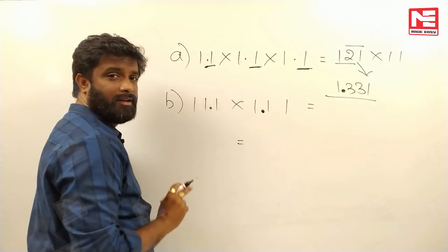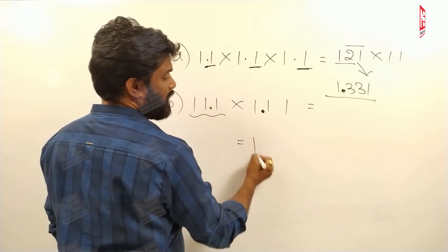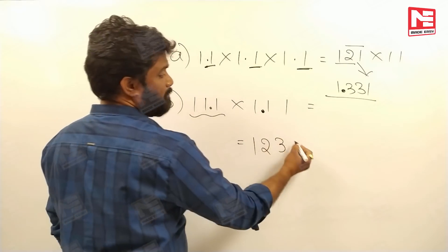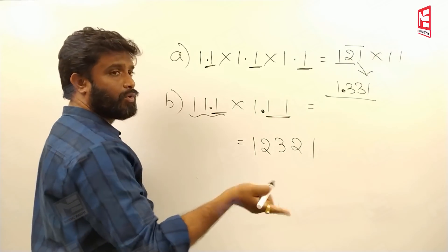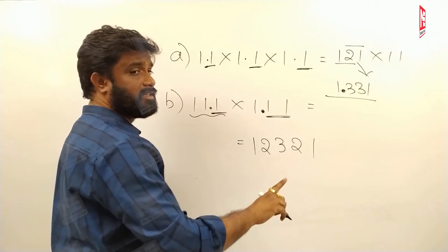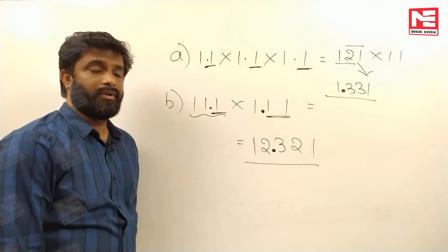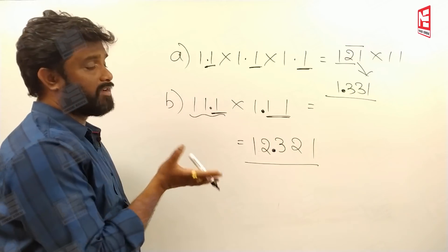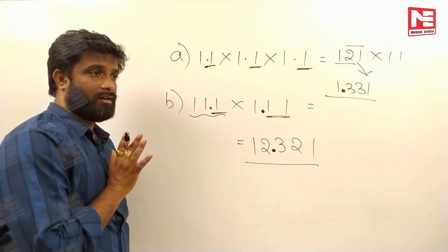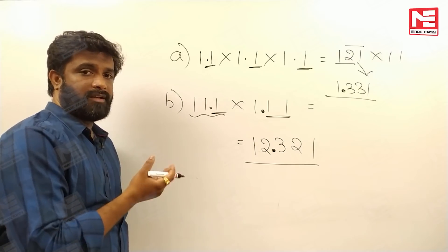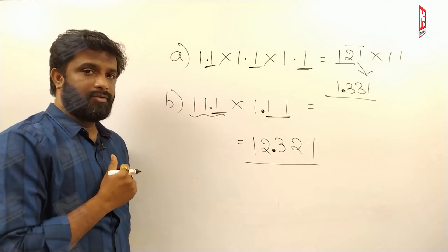The second part: 111.1 into 11.1 (or 1.11 into 11.1) — this is the all-ones pyramid for 3 ones into 3 ones, giving 12321. After the decimal point there are 2 digits in one number and 1 digit in the other, so 3 digits after the point in the product: the answer is 12.321. These techniques are highly useful for such exam questions.